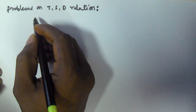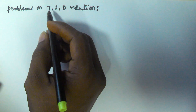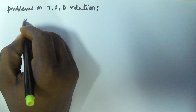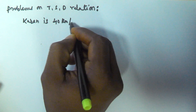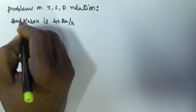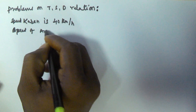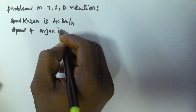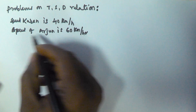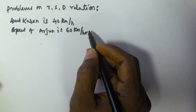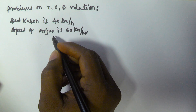Hello friends, in this video we will see some problems based on the time-speed-distance relation. The speed of Current is 40 kilometers per hour and the speed of Arjun is 60 kilometers per hour. What is the ratio of the time taken by each to cover the same distance?